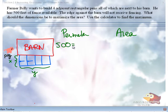So according to our picture, how many total x's do we have? Five. One, two, three, four, five - these are all x's. Plus how many y's do we have? Just one, because the edge against the barn will not receive fencing.